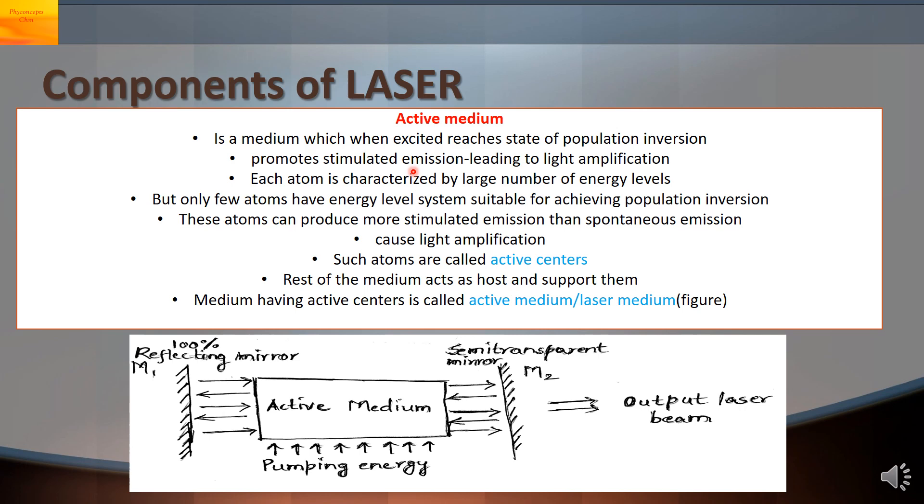The requirement is that the atoms should be in the higher states and when those atoms collide with the incident photon that leads to stimulated emission. It will emit another photon and this leads to light amplification. Each atom is characterized by large number of energy levels but only few atoms will be suitable for achieving population inversion.